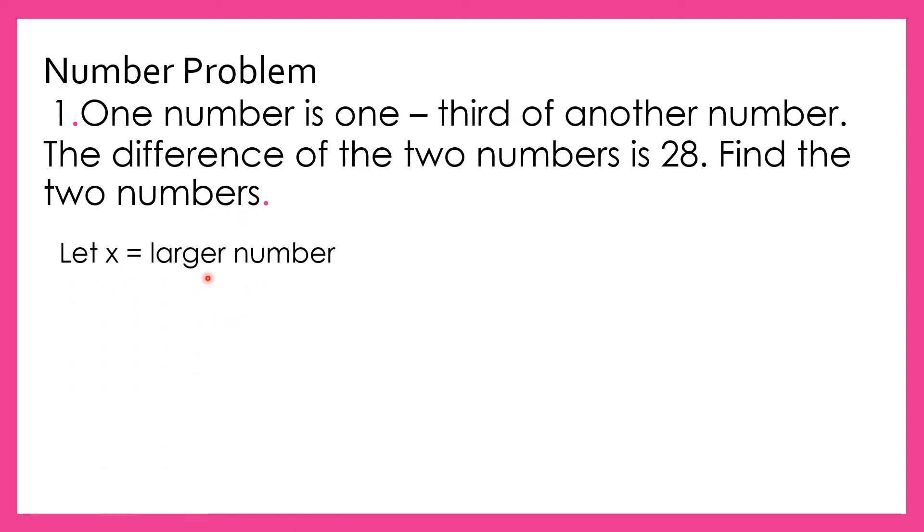Let x be the larger number. Remember, we are talking about two numbers here. One number is one-third of another, so x is the larger number and one-third x is the smaller number. So our equation must be x minus x over 3 equals 28, because the difference of the two numbers is 28. When you subtract them, you get 28. That will be our equation.